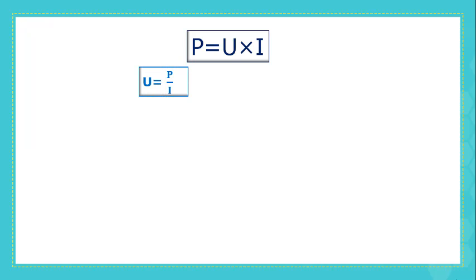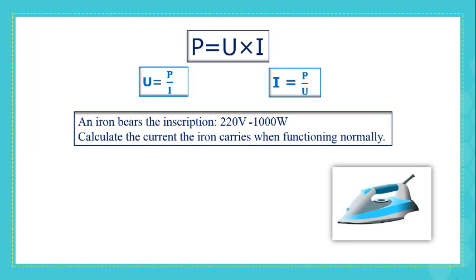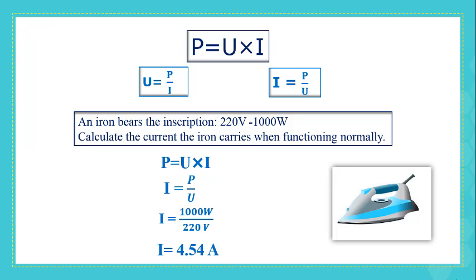Since P = U × I, to calculate voltage we divide power by current, and to calculate current we divide power by voltage. Application: an iron carries the inscription 220 volts, 1000 watts. Calculate the current the iron carries when functioning normally. Dividing power by voltage: 1000 watts divided by 220 volts equals 4.54 amperes. So the iron carries 4.54 amperes while functioning normally.